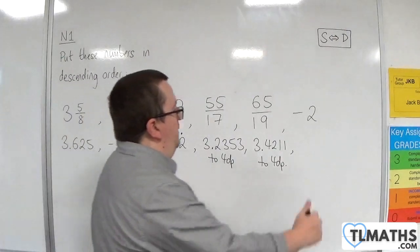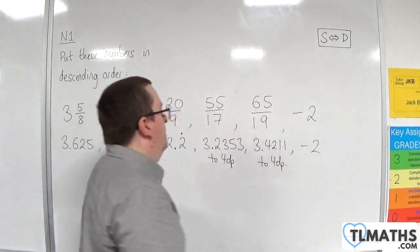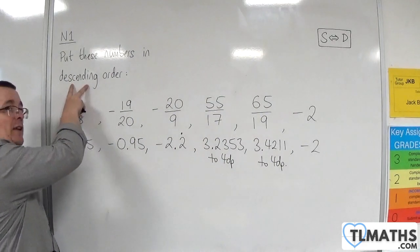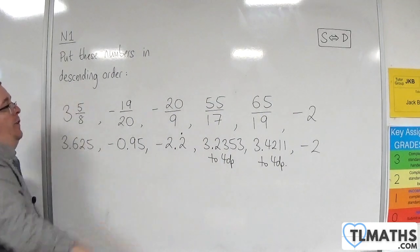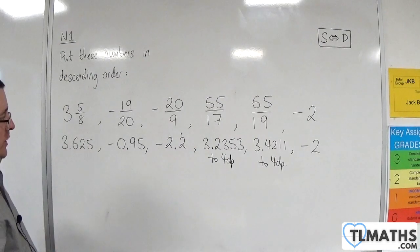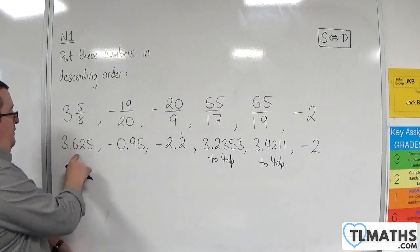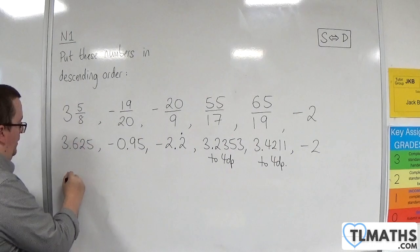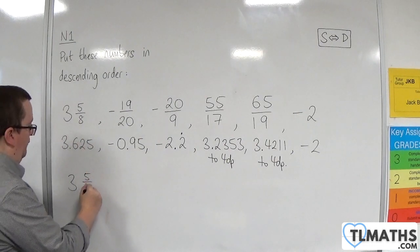And then, of course, we've got minus 2. Okay, so we want to go in descending order. So that means we need the largest, or the most positive, to go first. So the most positive is the 3.625, which is the 3 and 5 eighths. So that is first.